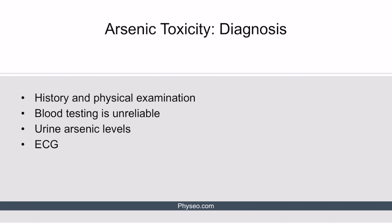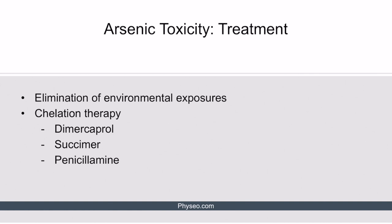The diagnosis of arsenic toxicity begins with a careful history and physical, looking for likely sources of arsenic exposure and signs or symptoms of arsenic poisoning. Unlike lead toxicity, blood testing is unreliable because arsenic is cleared too quickly from the blood. Instead, urine arsenic levels can be obtained to support the diagnosis and are a good measure of current or recent exposure. An ECG should be obtained in all patients with suspected arsenic poisoning due to concern for QT prolongation. Treatment begins with elimination of environmental exposures and often involves chelation therapy with dimercaprol, succimer, or penicillamine.